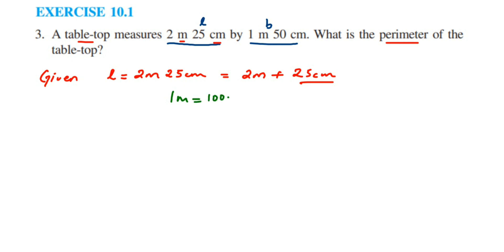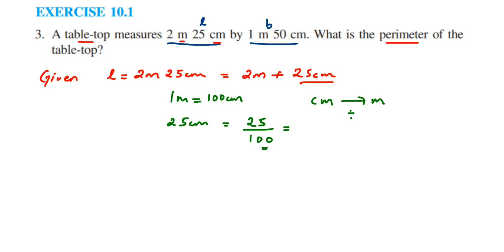To convert centimeter into meter, you're converting a smaller unit to a greater unit, which means you divide. So to convert 25 centimeter into meters, divide 25 by 100. Instead of cancelling, I'll directly place the decimal — since there are two zeros in the denominator, place the decimal two digits from the right. So 25 ÷ 100 = 0.25.